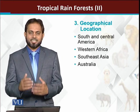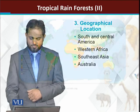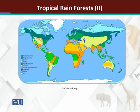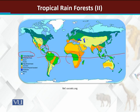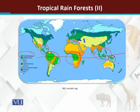Looking at a world map, the equator passes through the Earth. On either side of the equator — both north and south — if you can see, tropical rainforests are found in Central America, South America, Western Africa, Southeast Asia, and some areas of Australia.